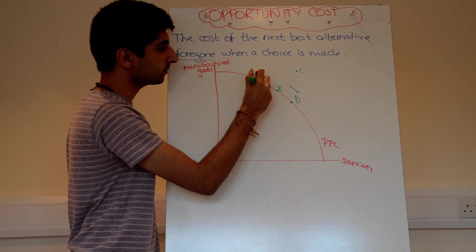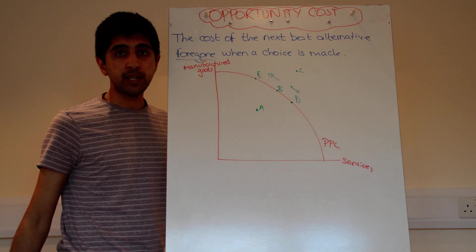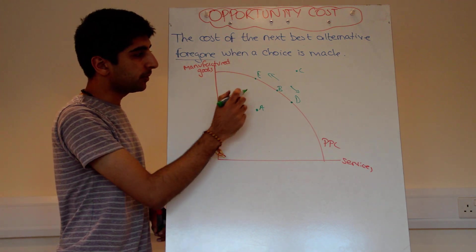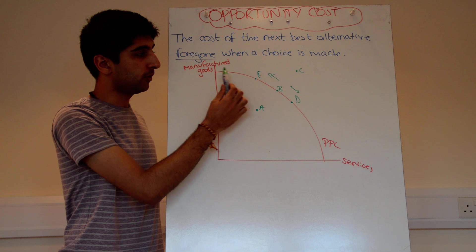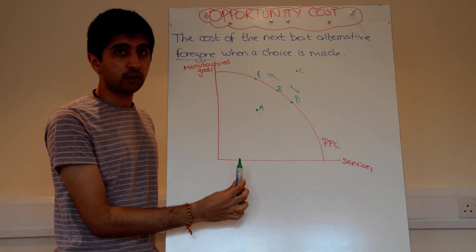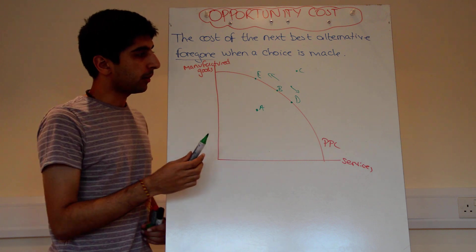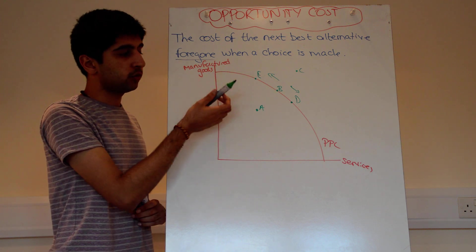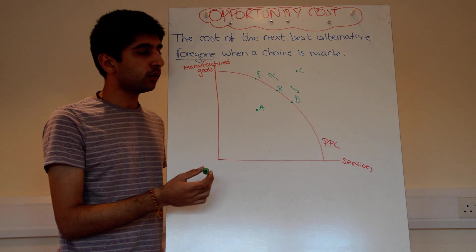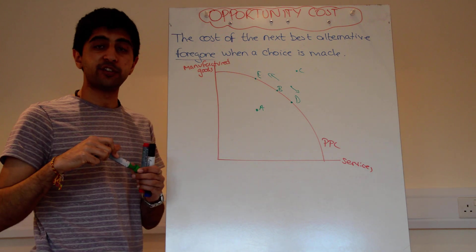Going the other way — if the economy decides to produce at point E instead, people that consume goods are better off and more goods will be produced, but people that consume services are worse off as less services will be produced. So by making goods consumers better off while making services consumers worse off, by definition point B must be Pareto efficient.